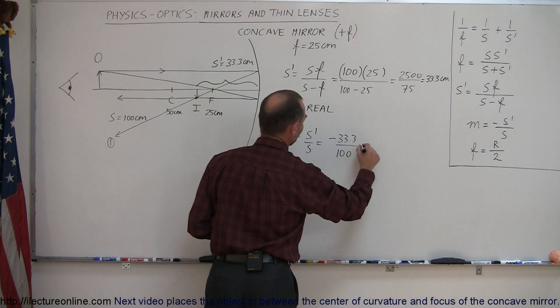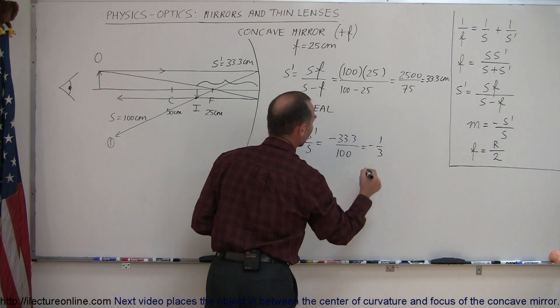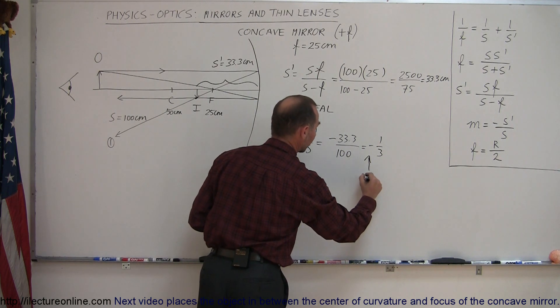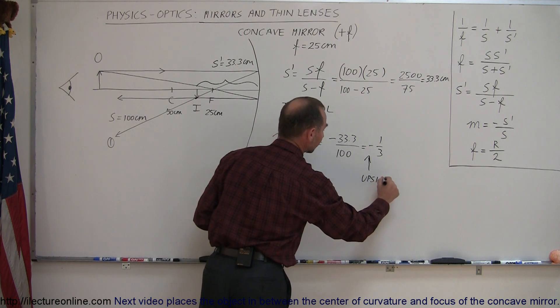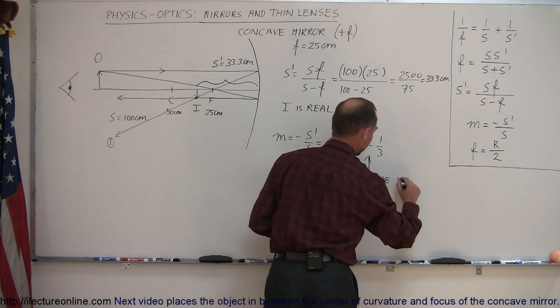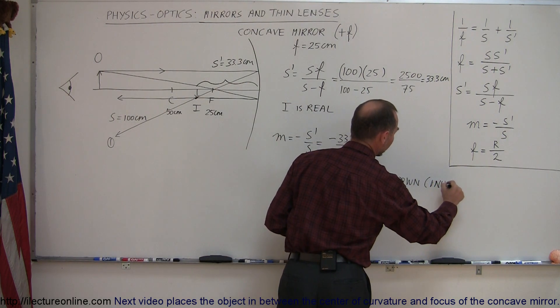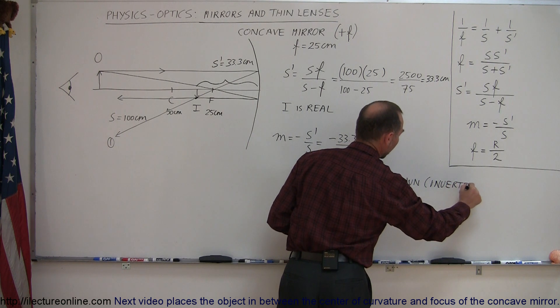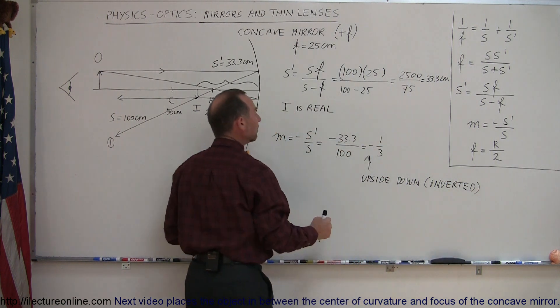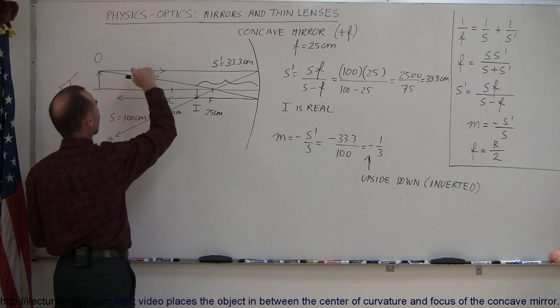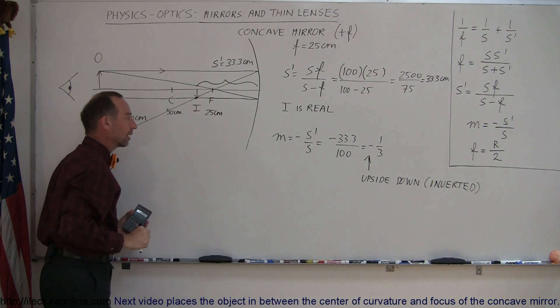And it looks like that's going to be minus one-third. So there, the minus here tells us that it's upside down. So the minus tells us it's upside down or inverted, as we would call it. And the magnification is one-third, meaning that the image size is one-third the size of the object. And that looks about right on our graph right here.